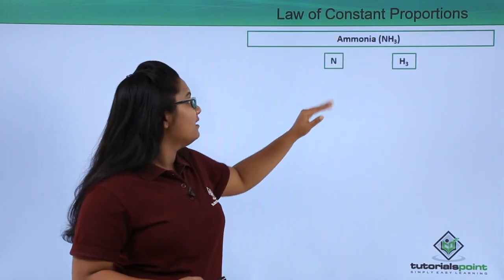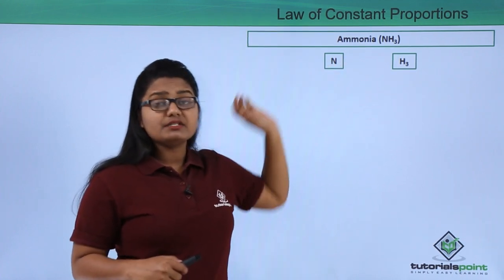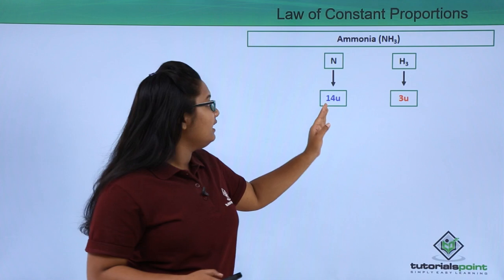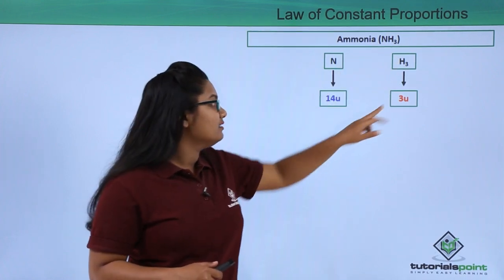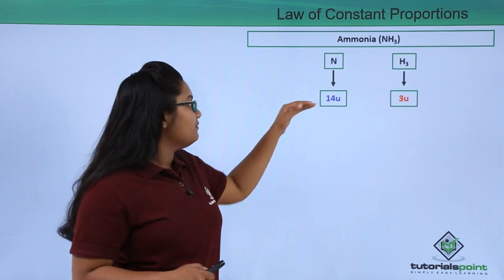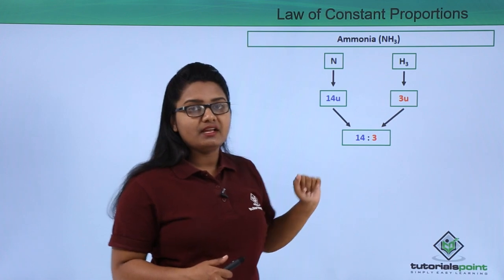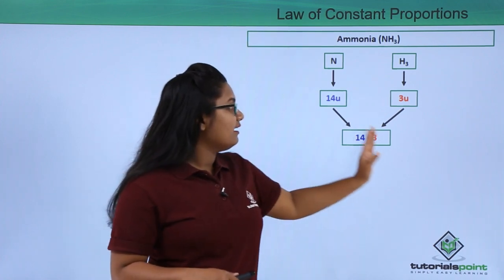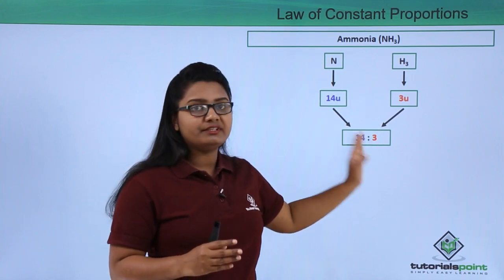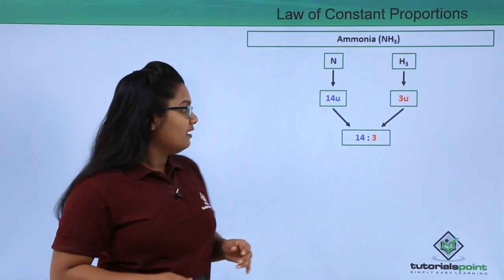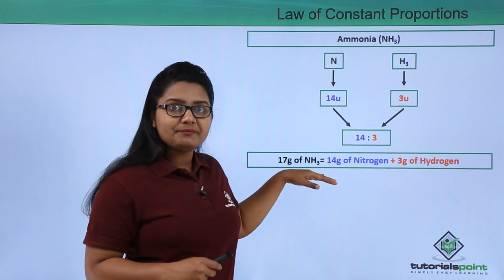Another example is ammonia, which has one nitrogen atom and three hydrogen atoms. A nitrogen atom weighs 14u and three hydrogen atoms together weigh 3u. The ratio of nitrogen to hydrogen by mass is therefore 14:3, meaning nitrogen and hydrogen are always present in ammonia in the ratio 14:3.